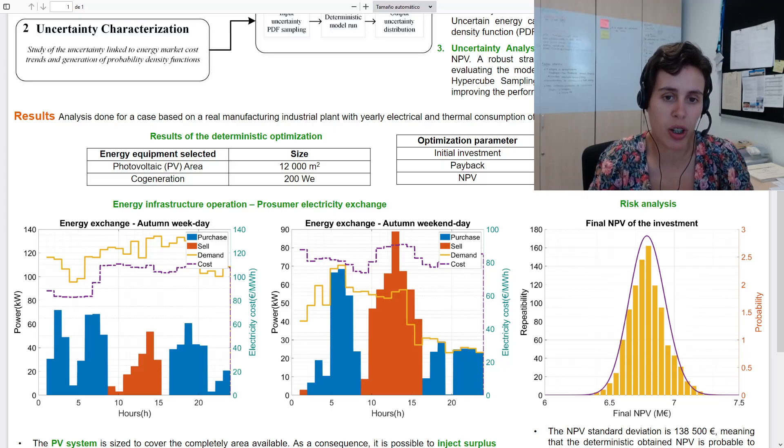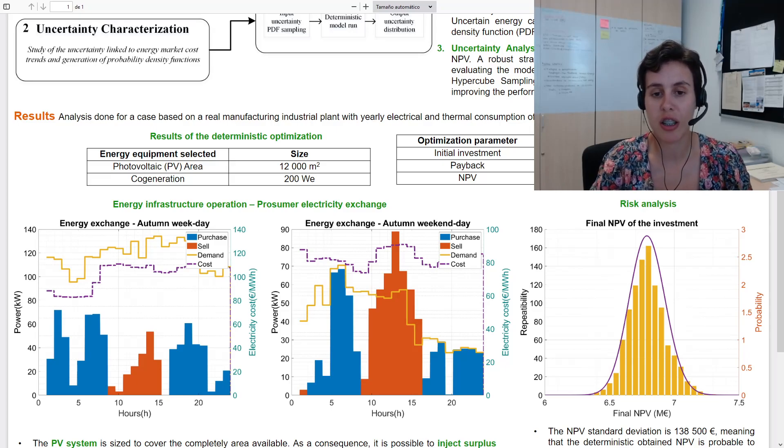Also, a cogeneration system is employed, which serves both to cover electrical and thermal demand at the same time, minimizing the purchase of electricity from the utility grid.